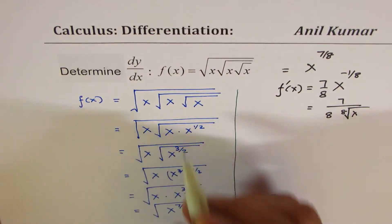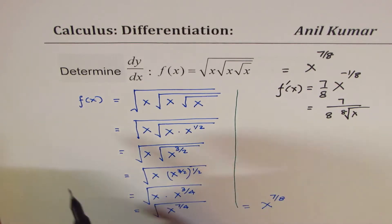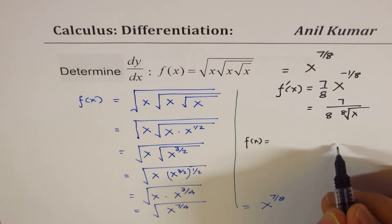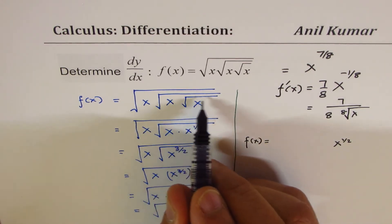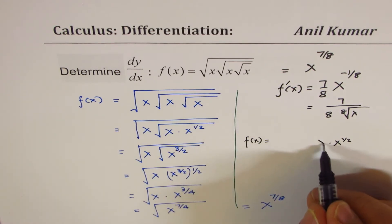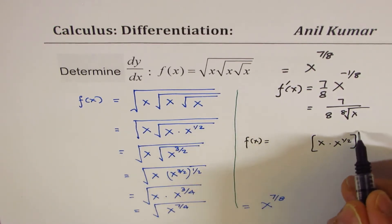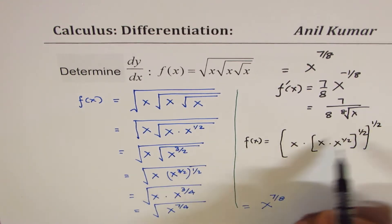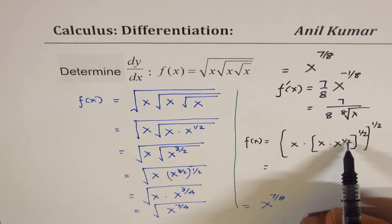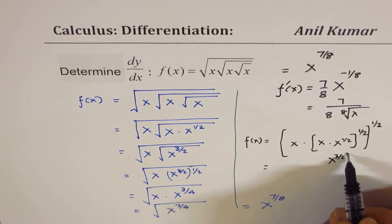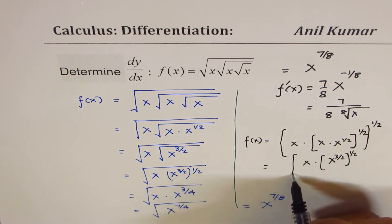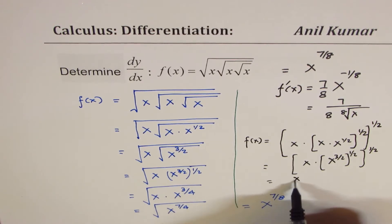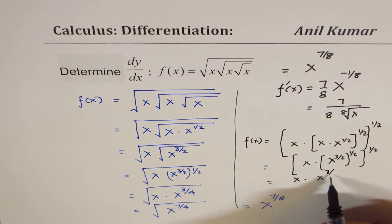Let me show an alternate way of doing this simplification. We are given f(x) with all nested square roots. Beginning from the inside out again: x to the power of 1/2, times x, all to the power of 1/2, then again times x, all to the power of 1/2. Inside: 1/2 + 1 = 3/2, so we get x^(3/2) to the power of 1/2, times x, everything to the power of 1/2. Instead of writing square roots, write as powers.